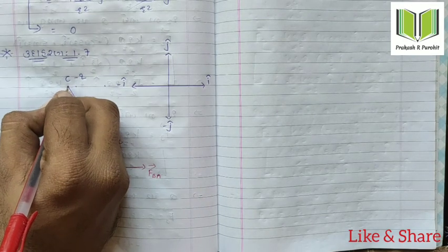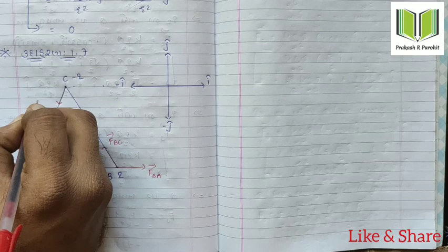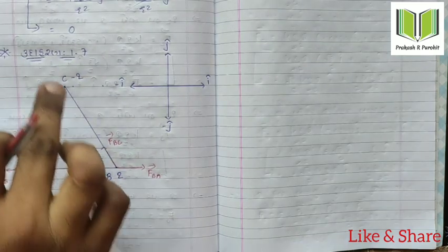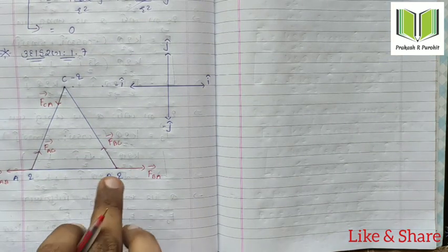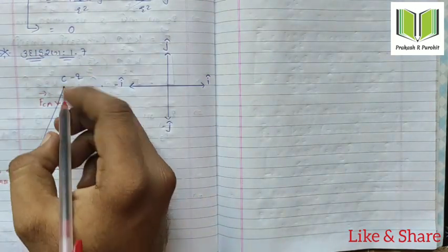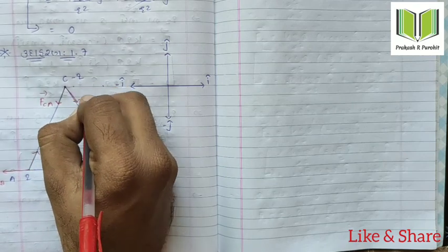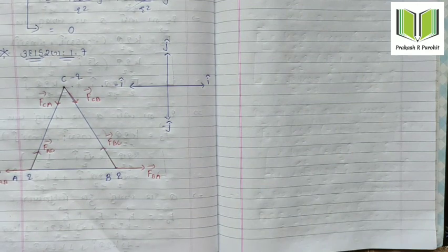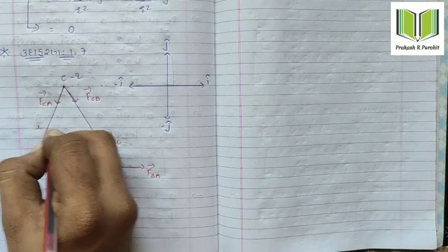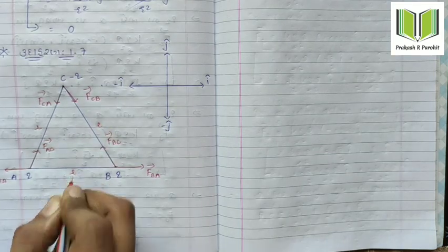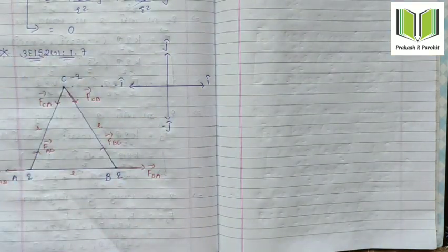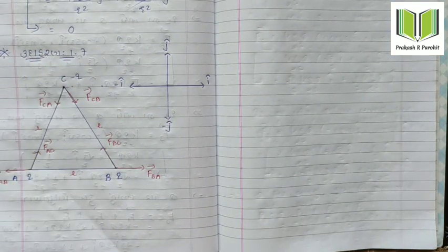We have forces acting at points A, B, and C. The corners are labeled A, B, and C. The pairs are A and B, B and C, and C and A. The formula is Q1Q2 by R squared for the force between two charges.